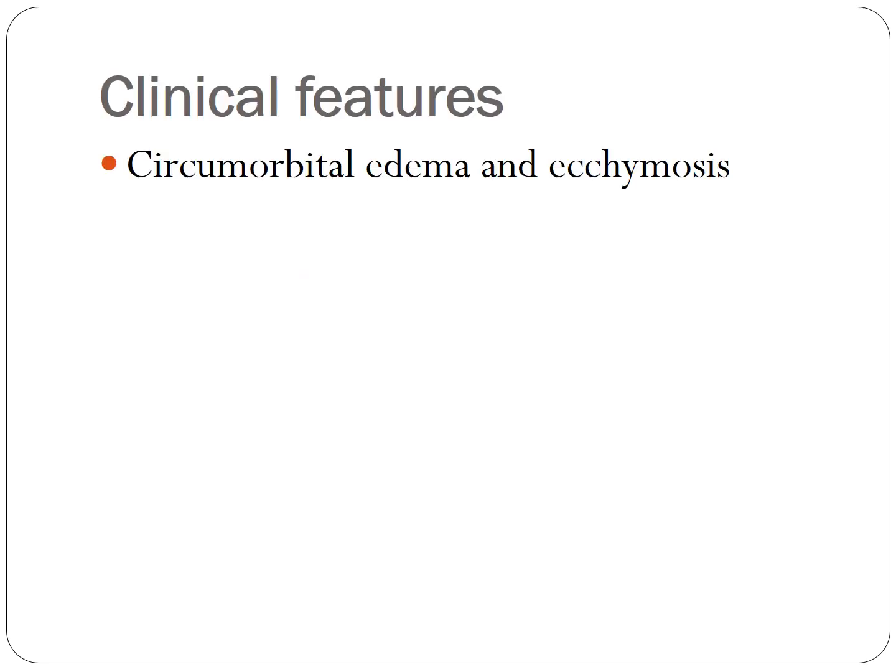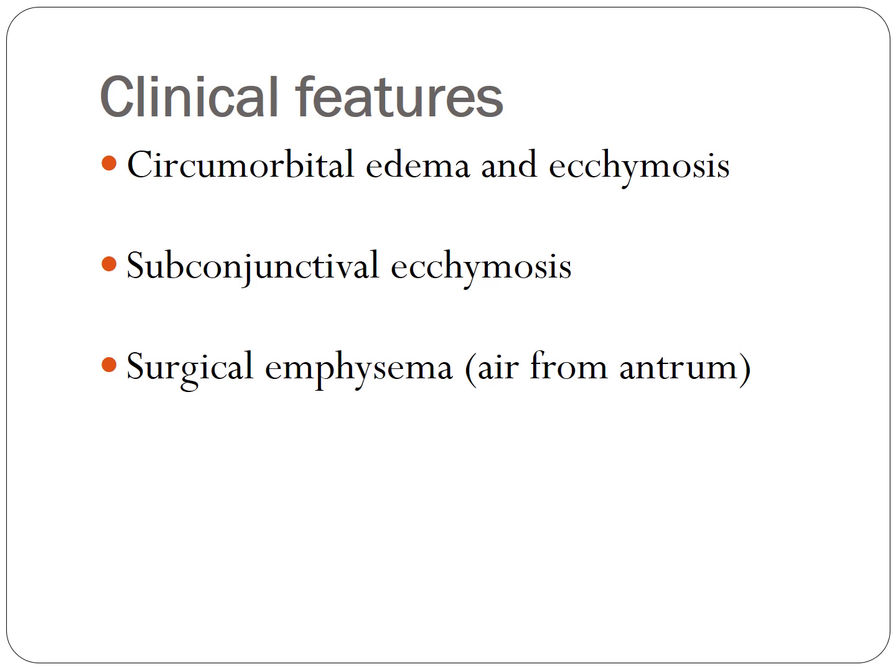Following orbital blowout fracture, clinical features include circumorbital edema and ecchymosis, subconjunctival ecchymosis, and surgical emphysema — air from the maxillary antrum trapped in tissue spaces. Initially there may be exophthalmos due to edema, but once edema subsides, the increased orbital volume (from the floor defect) causes the eyeball to sink into the orbit, leading to enophthalmos.